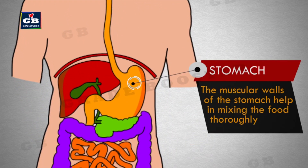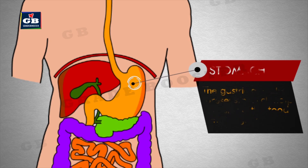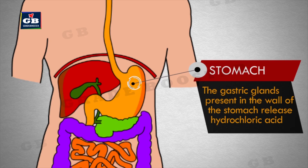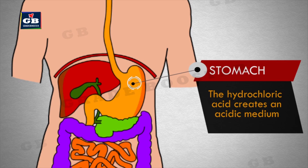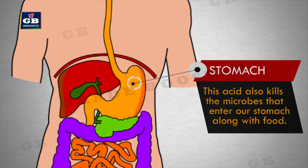The stomach is a large organ which expands when food enters into it. The muscular walls of the stomach help in mixing the food thoroughly with more digestive juices. The gastric glands present in the wall of the stomach release hydrochloric acid, a protein-digesting enzyme called pepsin, and mucus. The hydrochloric acid creates an acidic medium which facilitates the action of the enzyme pepsin. This acid also kills the microbes that enter our stomach along with food.